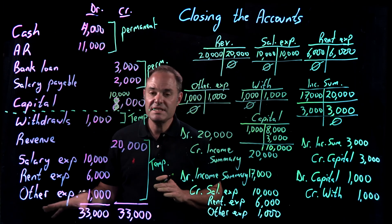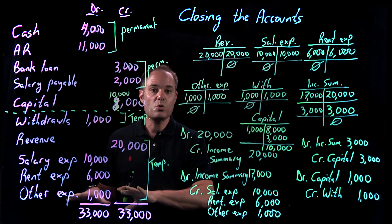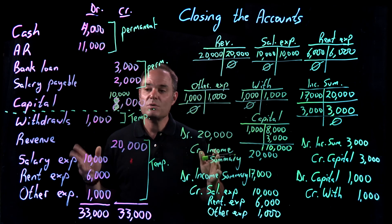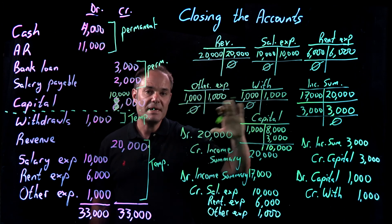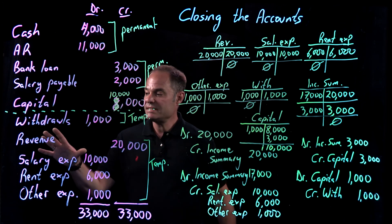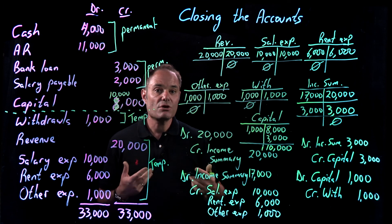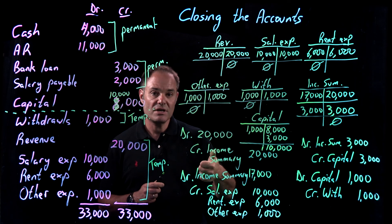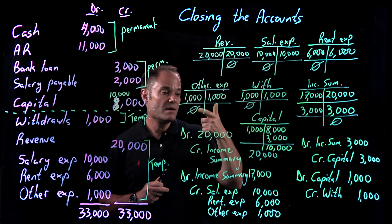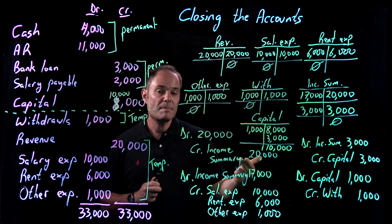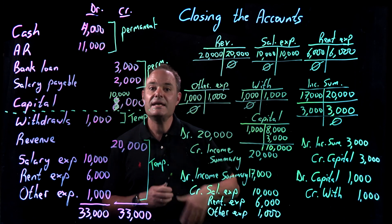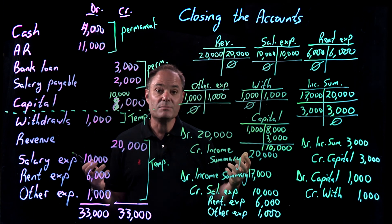Our closing trial balance reflects all of these adjustments — the temporary accounts are all zero, and now we're ready to start recording transactions for the new year. We go through the exact same process again: recording transactions in the journal, posting them to the ledger, creating a trial balance, doing adjusting entries, creating an adjusted trial balance, creating financial statements, closing them out again, and over and over. That's the accounting process.